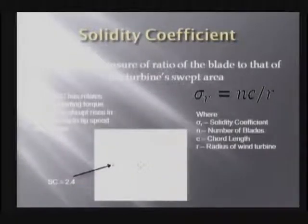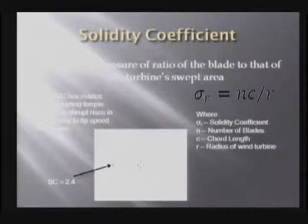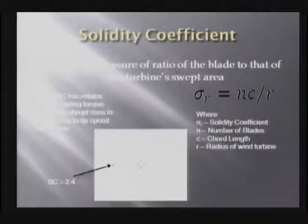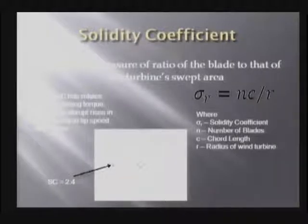When you design vertical axis wind turbines, one of the main features to look out for is the solidity coefficient, which is the measure of the ratio of the blade to the turbine swept area. The formula is the number of blades times the cord length over the radius of the wind turbine. A high solidity coefficient relates to higher starting torque, which is important for a vertical axis wind turbine, but it also results in abrupt rises in the efficiency-to-tip-speed-ratio curve. We wanted a high solidity coefficient so that we could have macro-size data acquisition. Our solidity coefficient was about 2.4, whereas generally the range is about 0.2 to 0.6, but we wanted large data and higher vibrations so that we could measure them.